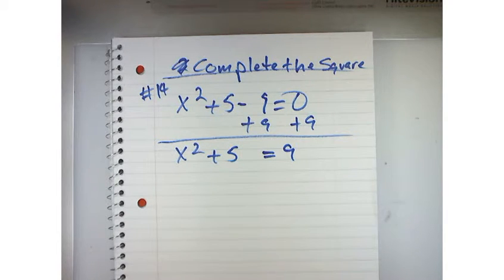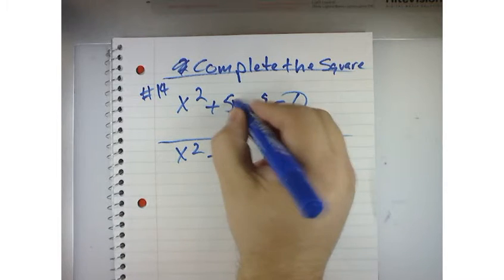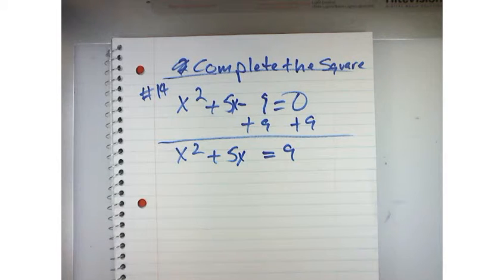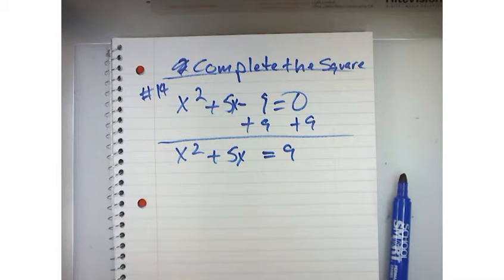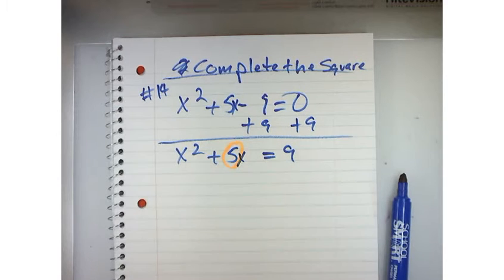This has got an x in it, 5x. So now what Mr. Adams said, the next step, once we get it to look like this, I'm going to take whatever this number is, and I'm going to divide it by 2 and square it.